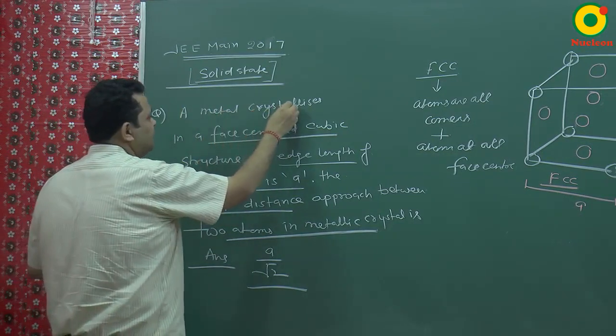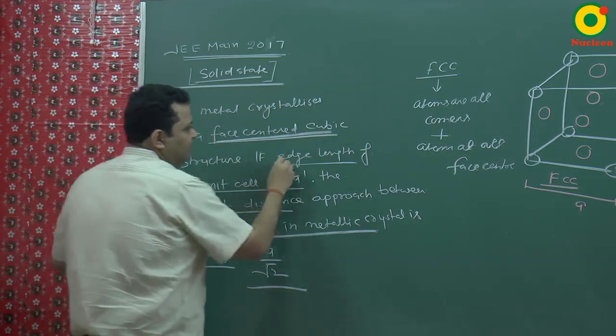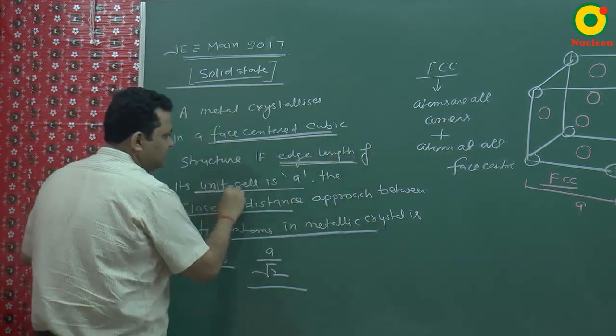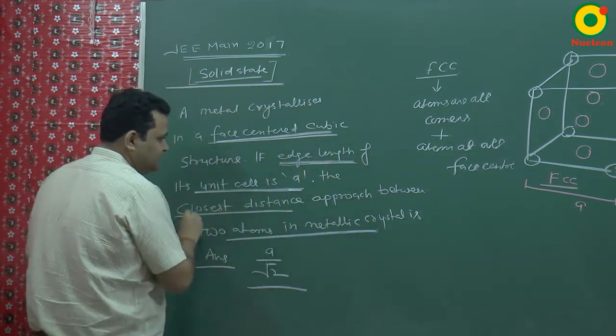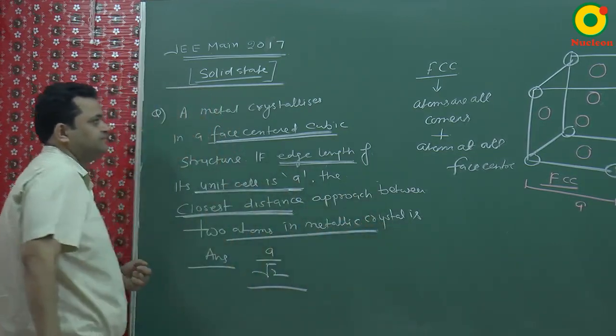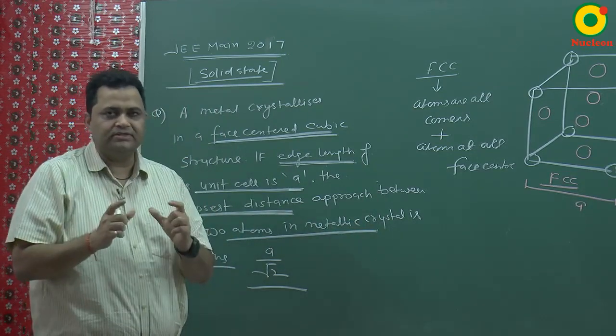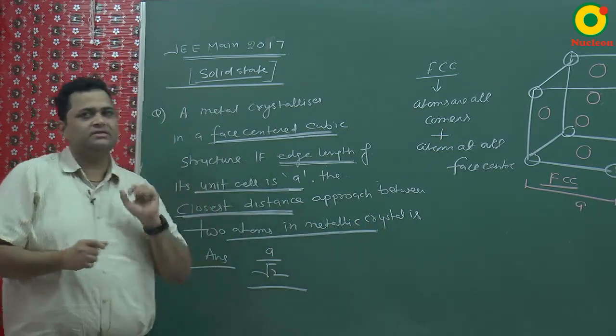A metal crystallizes in a face-centered cubic structure. If the edge length of the unit cell is a, what is the closest distance approached between two atoms in a metallic crystal? Closest distance means when two atoms touch each other.